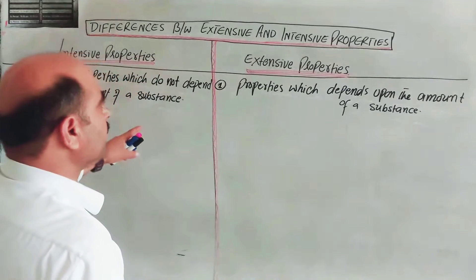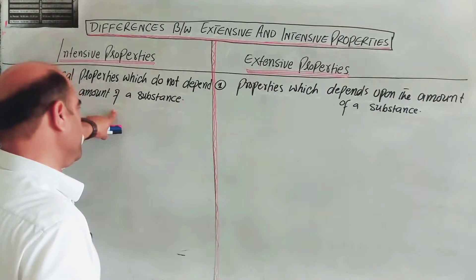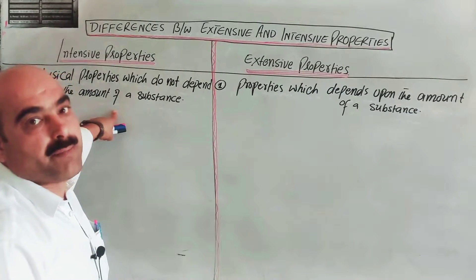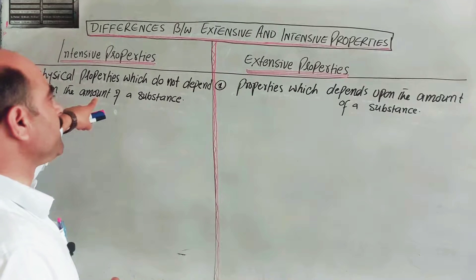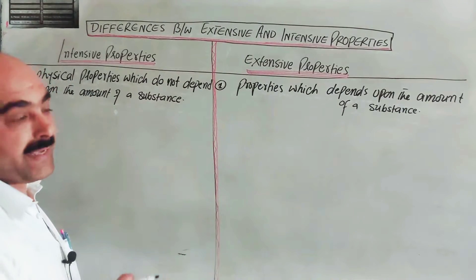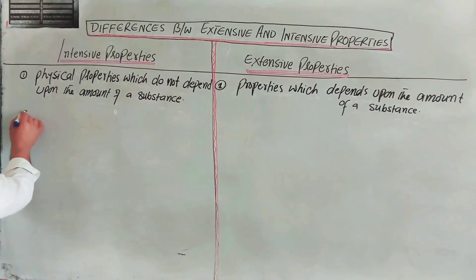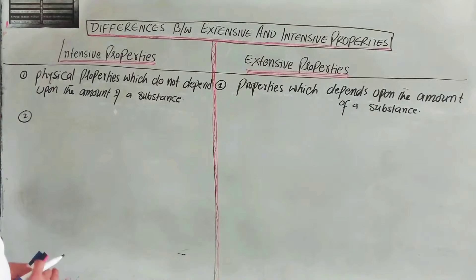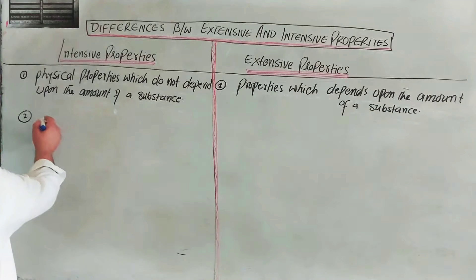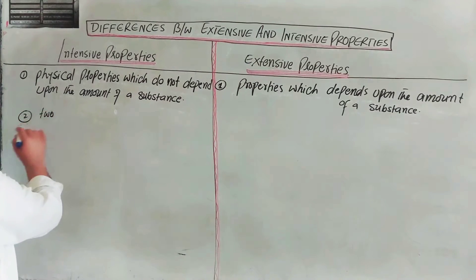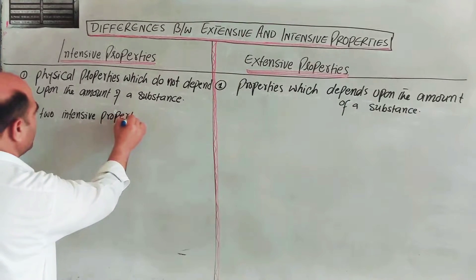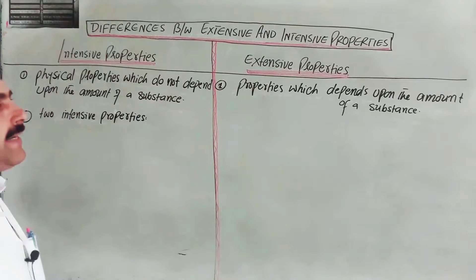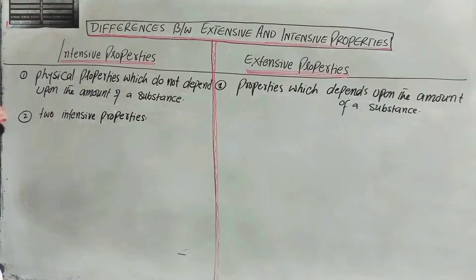Now, if we divide two intensive properties — one intensive property divided by another intensive property — the result is also an intensive property.